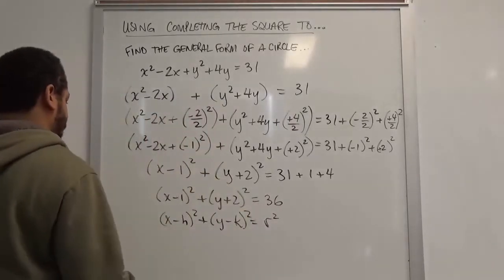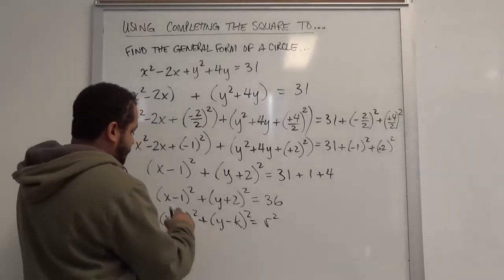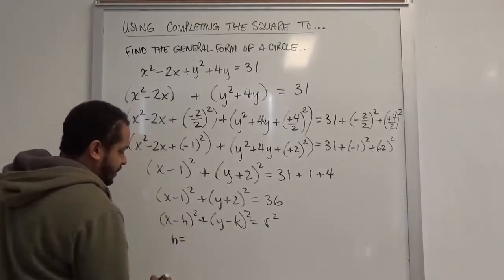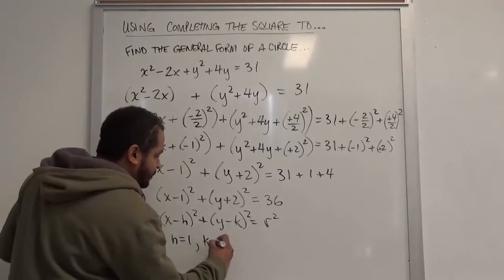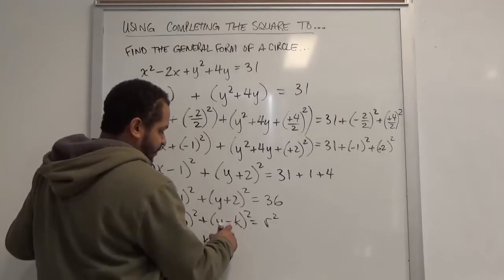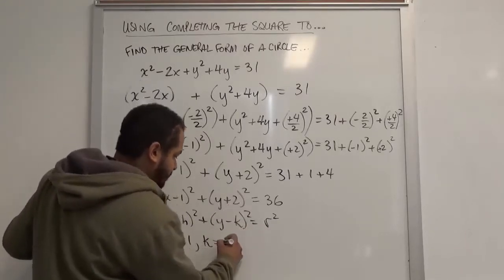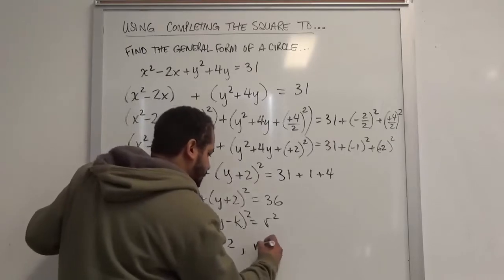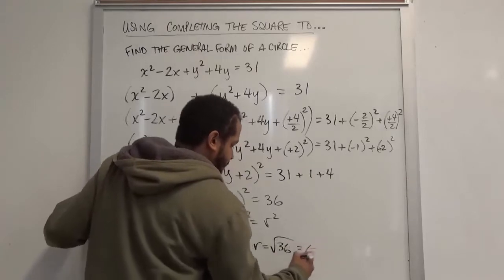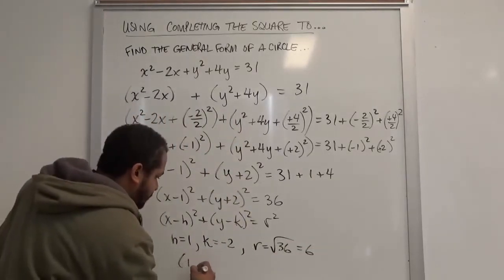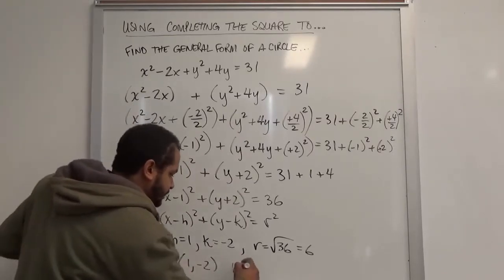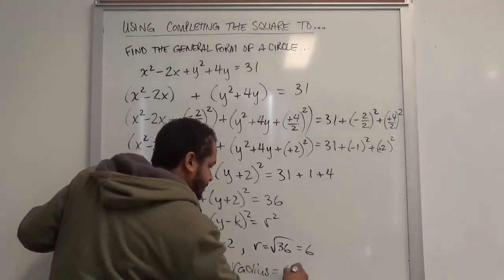Here we see that our center of the circle is the h and k value. Since h is also negative like this value is, we can just assume the h value is the constant value here of 1. The k value, as it's negative and this one's positive, we know to make a negative number positive, this should be negative 2, so the k value is negative 2. Our radius value is the square root of 36, which is just 6. So our center of the circle is 1, negative 2, with a radius of just 6.